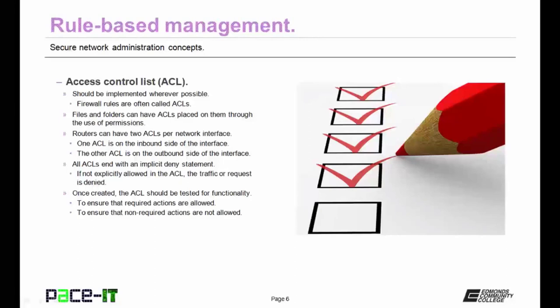Files and folders can have ACLs placed on them through the use of permissions. As a general rule, routers can have two ACLs per network interface: one ACL on the inbound side and the other on the outbound side — and the two ACLs don't have to have the same rules. All ACLs should end with an implicit deny statement, meaning if it's not explicitly allowed, the traffic or request is denied. Once created, the ACL should be tested thoroughly for functionality — to ensure that required actions are allowed and non-required actions are not allowed.